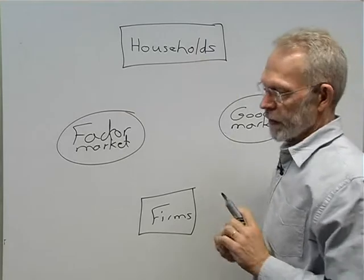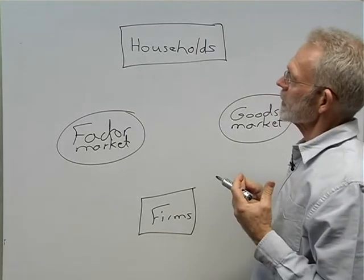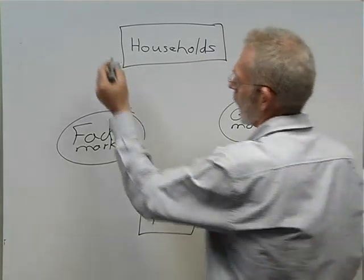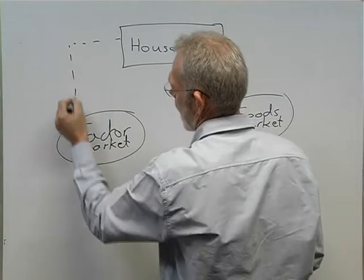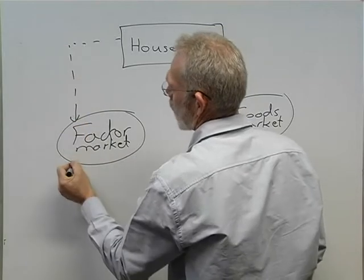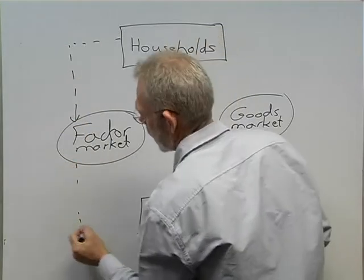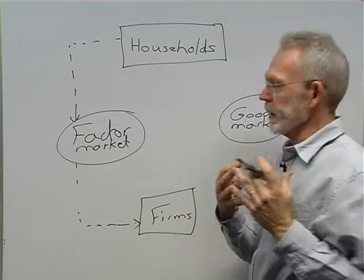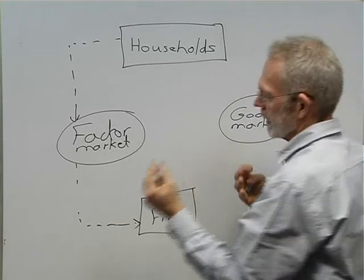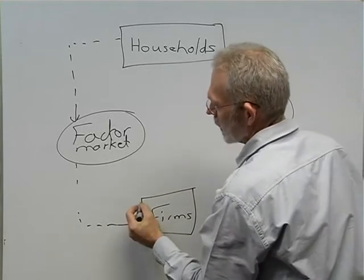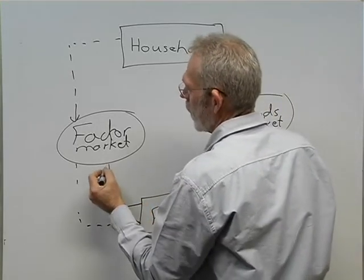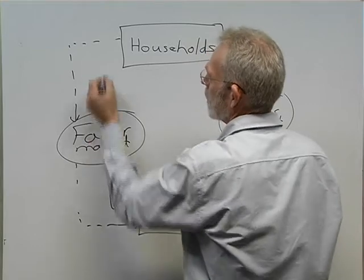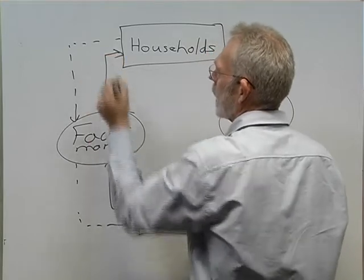Households are the owners of the factors of production, which they provide to firms via the factor market. In return, they receive an income, so there's a flow of income from firms back to households.